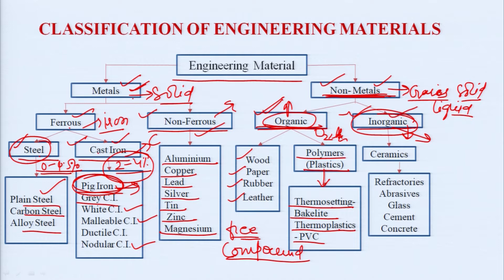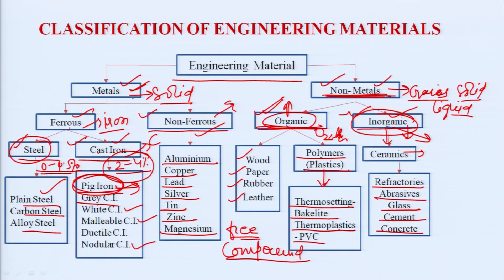The next sub-classification is polymers — we also call them plastics. All plastics are polymers, and polymers are divided into thermosetting and thermoplastic. For thermosetting we have bakelite, and for thermoplastic we have PVC. Inorganic materials are classified into ceramics, which are non-metallic solids made up of inorganic compounds such as oxides, nitrides, silicates, and carbides. Under ceramics we have refractories, abrasives, glass, cement, and concrete. This is the broad classification of engineering materials used for various applications.